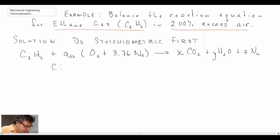And so looking at carbon, we can see we have carbon here and we have carbon there. And those are the only two places where we have carbon in our reaction equation. So we can write 2 on the left and that is equal to x on the right.